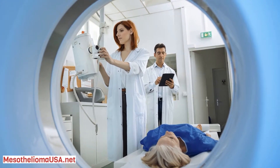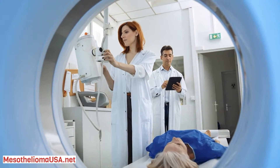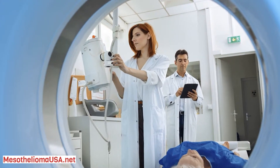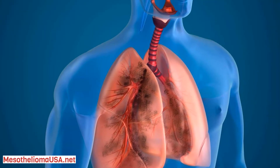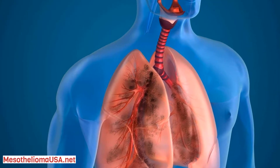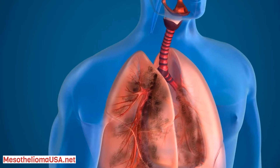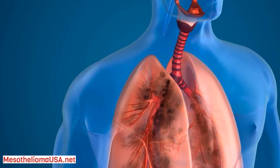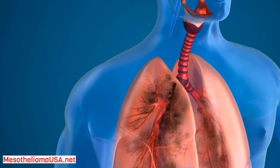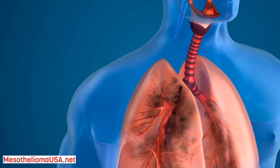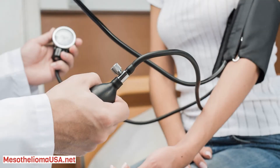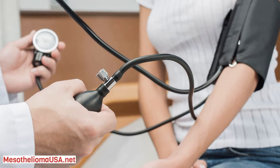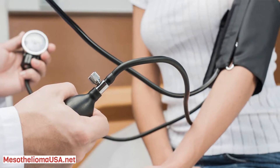Background: Malignant pleural mesothelioma is a rare malignant neoplasm that typically affects individuals occupationally exposed to asbestos through a variety of industries. MPM is cancerous proliferation of mesothelioma cells that involves a large extent of the pleural cavity and is the most common primary neoplasm of the pleura. Patients experience an insidious onset of symptoms including dyspnea, chest pain, cough, malaise, and weight loss. Metastatic pleural tumor is a type of cancer that has spread from another organ to the membrane surrounding the lungs — lung and breast cancers most commonly spread to the pleura.